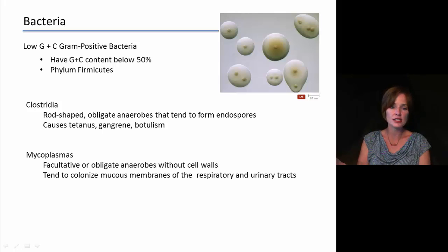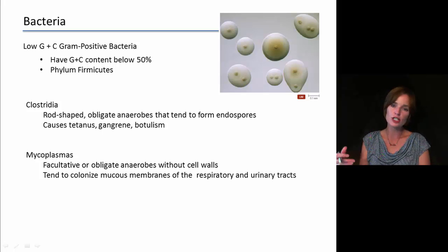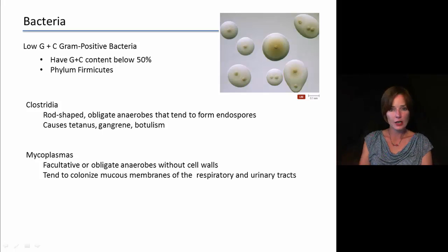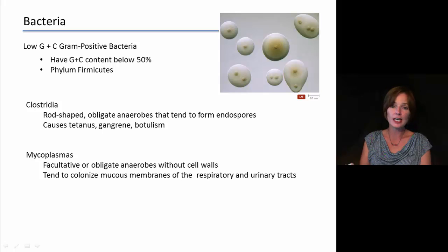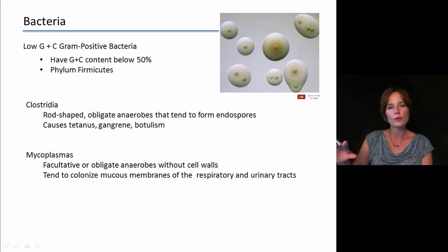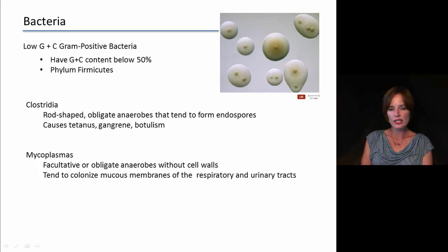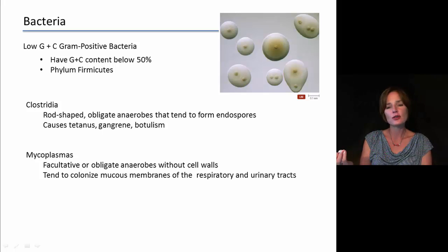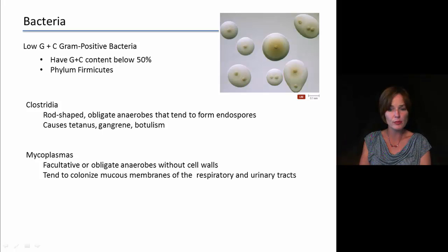Another group in this phylum is the mycoplasmas, which are unique because they do not have cell walls — unusual for bacteria. Mycoplasmas are either facultative anaerobes, meaning they can live with or without oxygen, or obligate anaerobes, meaning they don't survive in the presence of oxygen at all. These tend to colonize mucous membranes of the respiratory and urinary tracts. Under a microscope, they tend to look like a broken-open egg, with dark spots visible inside.